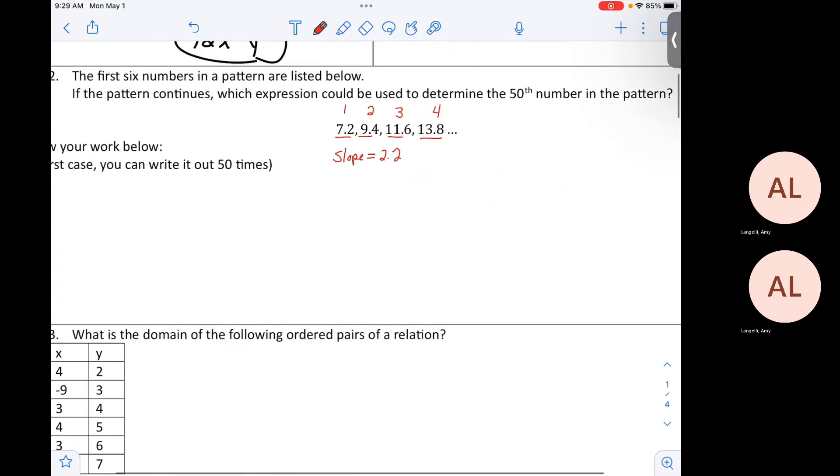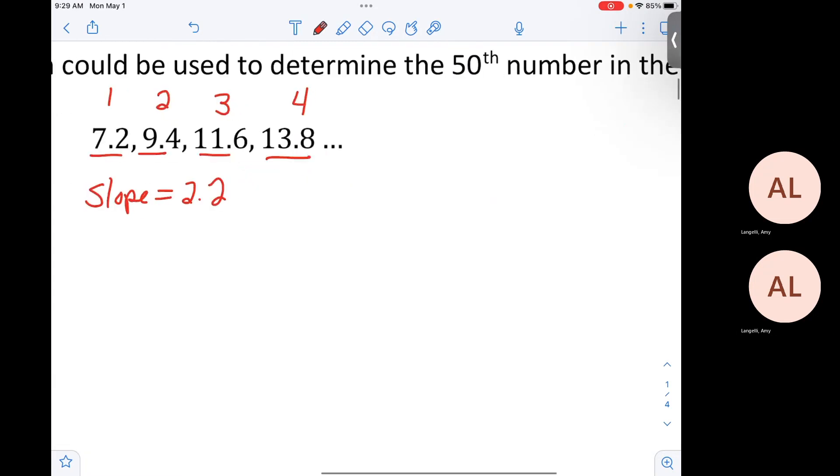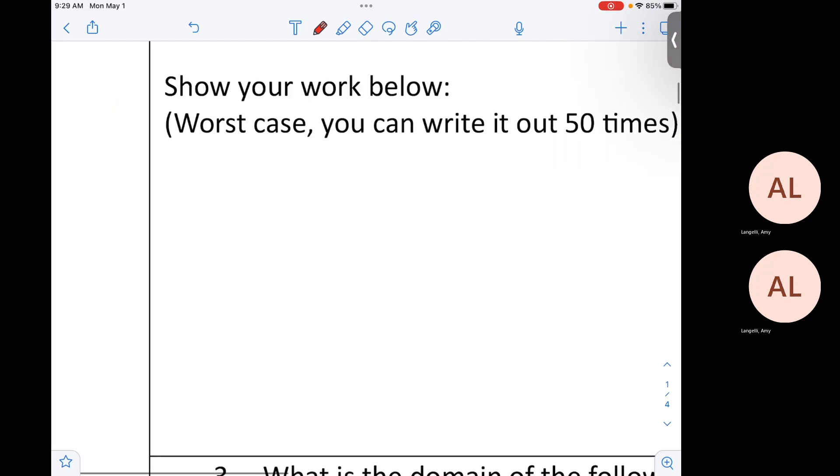It's increasing 2.2. Now, I'm going to guide you through three main steps. They're saying, what is the 50th number in the pattern? Let's say you guys have no idea how to make this equation. You could just write this list out 50 times. Step one, you found the slope, which you already found.